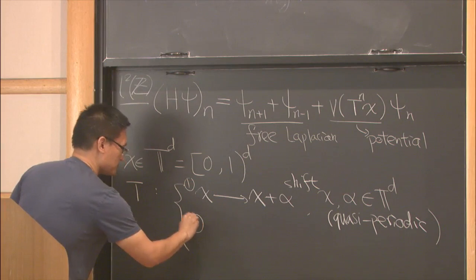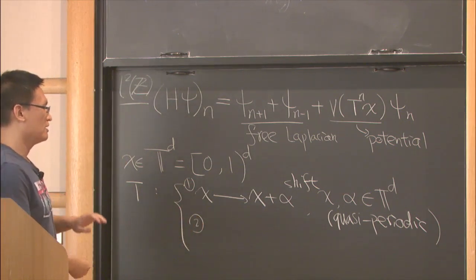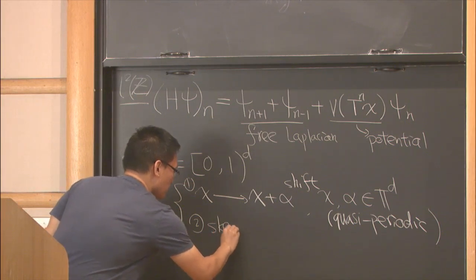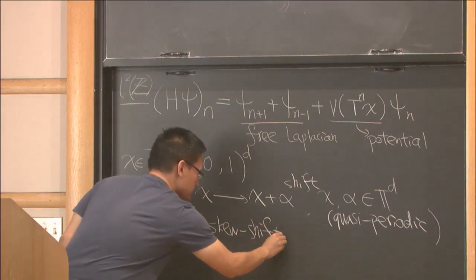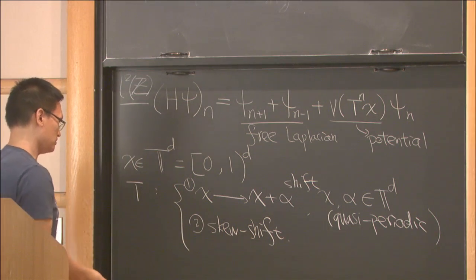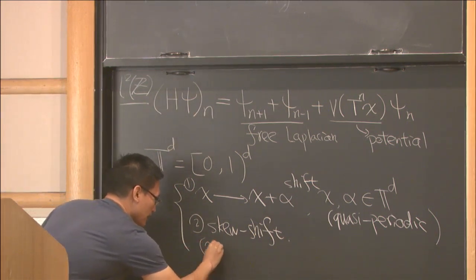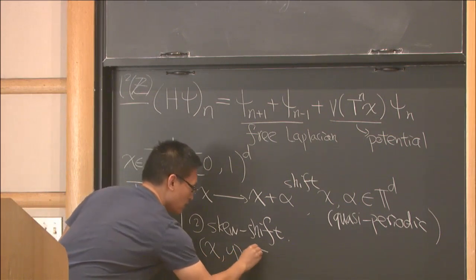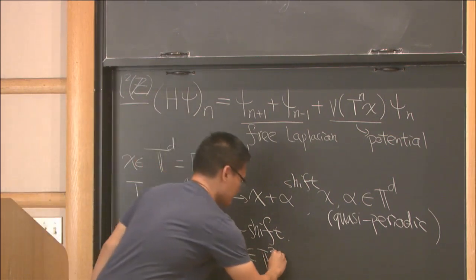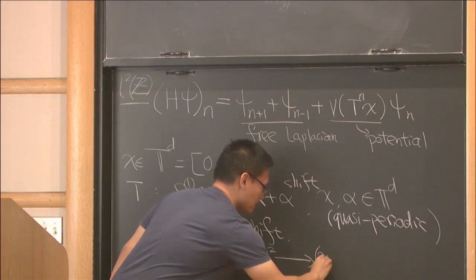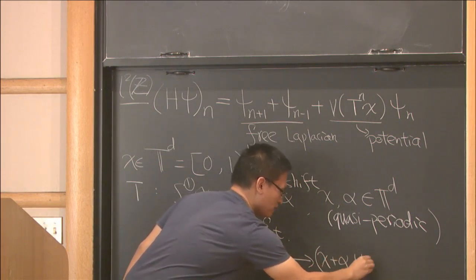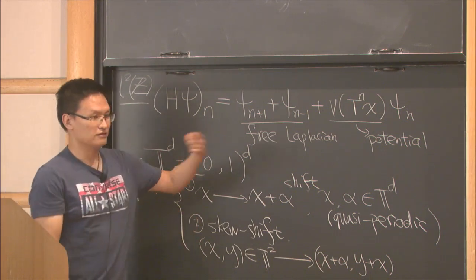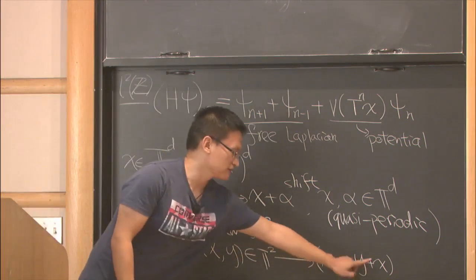The second kind of dynamics I want to talk about is called a skew shift. So it acts on T². So you take a point (x,y) on T², two-dimensional torus, and it's mapped to a point (x+α, y+x). So in the first coordinate, you're just rotated by α. In the second coordinate, you're rotated by x.